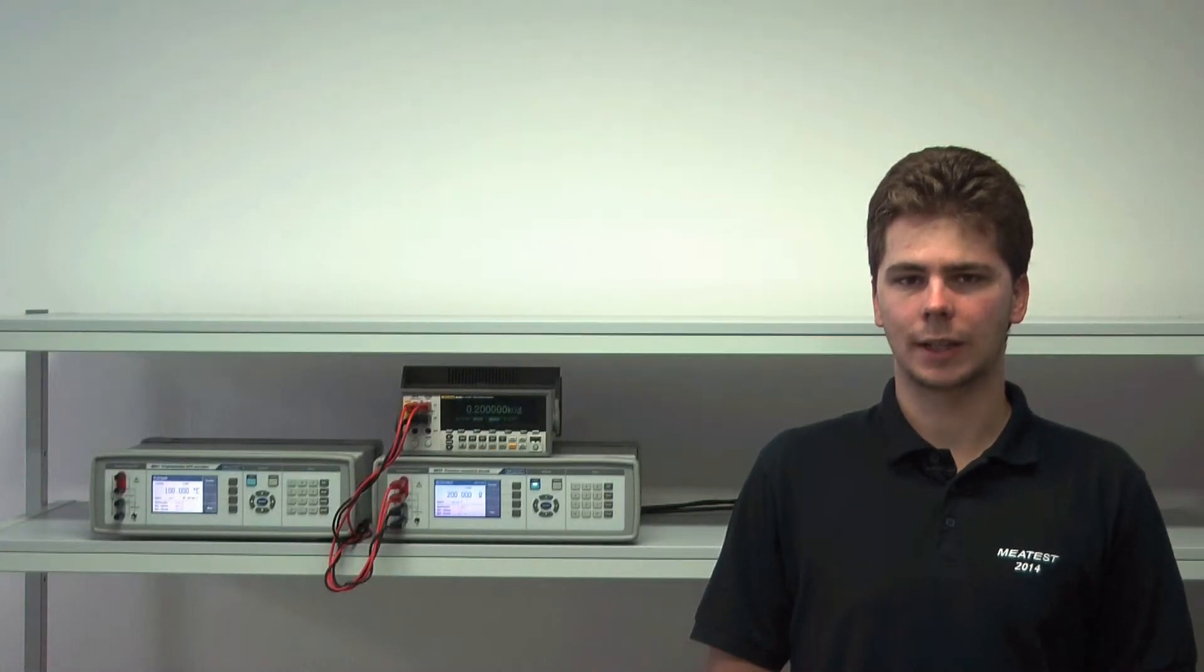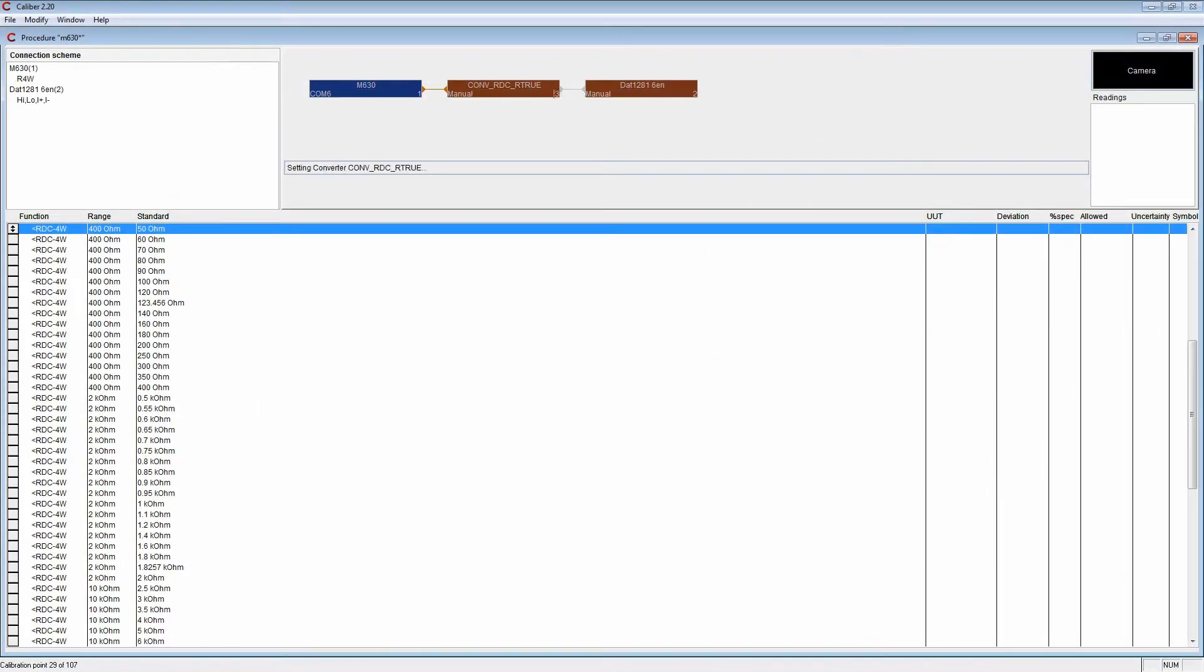To get the most out of your Meatest decade, use Calibre, a software for fully automated calibration. Using Calibre, you can simply create your own calibration procedures, execute them and export the calibration data for further processing.